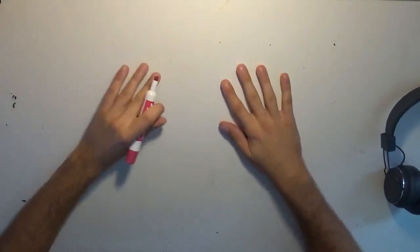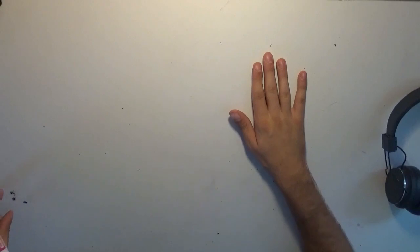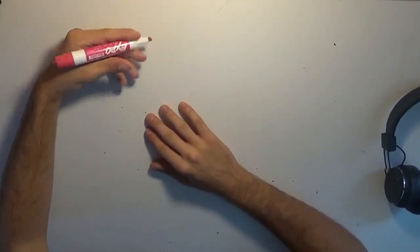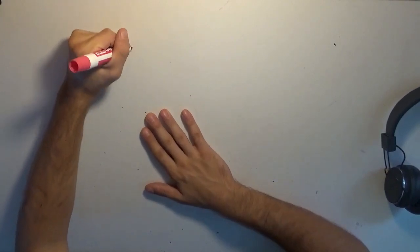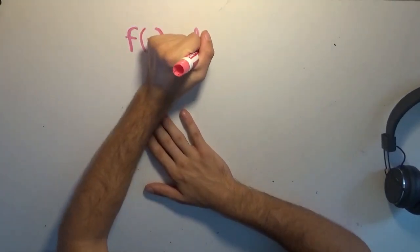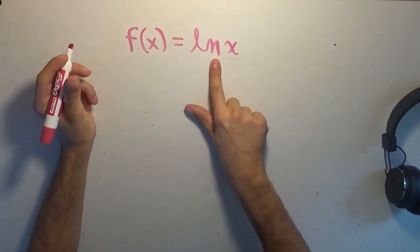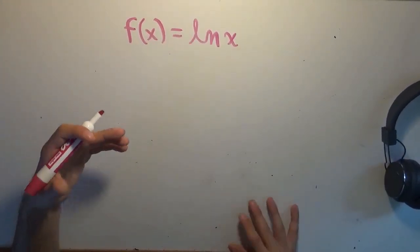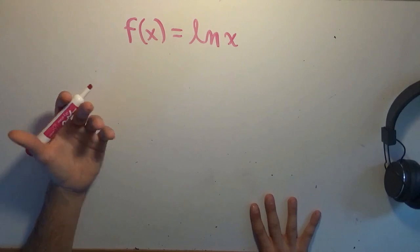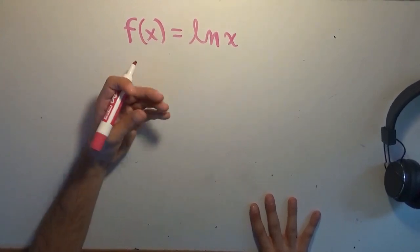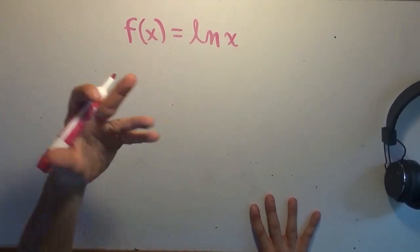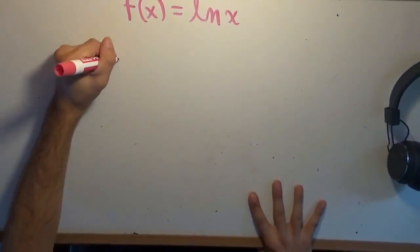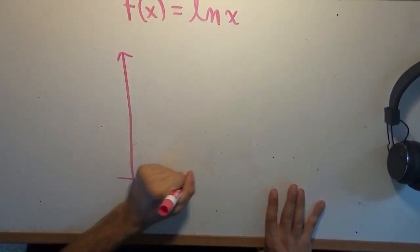Today I'd like to explore a rather strange integral, but first I need to do a little preliminary stuff. You may be familiar with a function called the natural logarithm of x — logarithmus naturalis of x, ln of x. It is the inverse of the exponential function e to the x. If you plug e to the x into this, you will get x back. If you plug this into e to the x, you will get x back. They're inverses of one another.